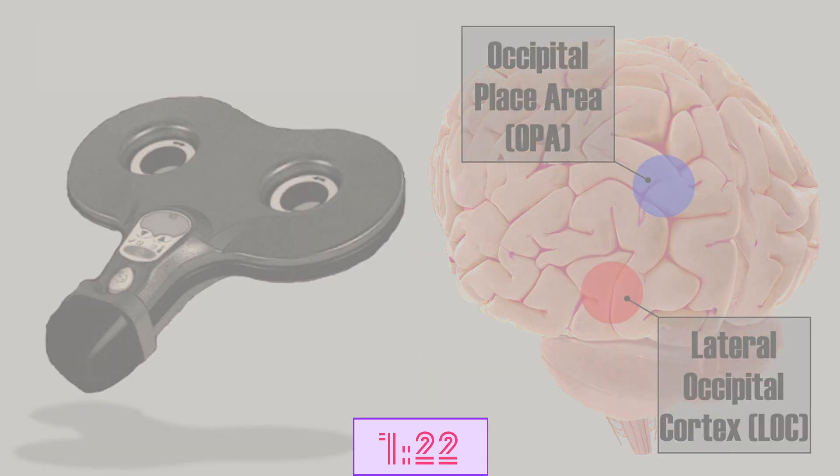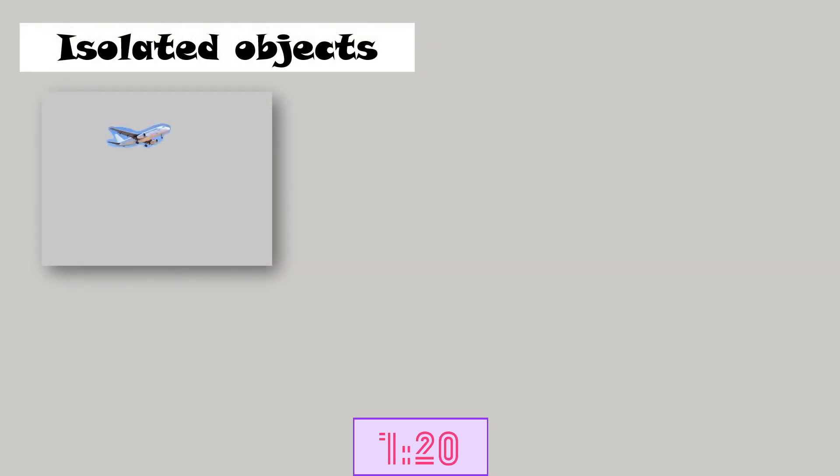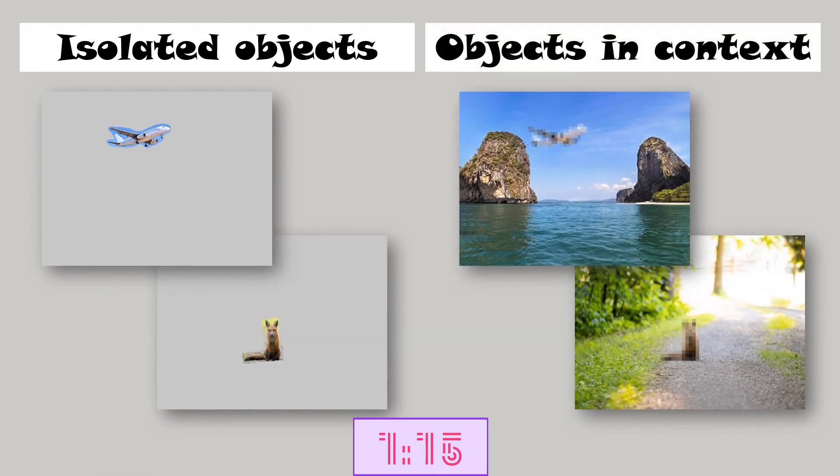Two kinds of images were shown: isolated objects with no background, or images with blurry objects and a complete background. Participants were asked which object they saw.